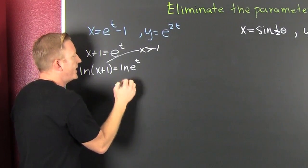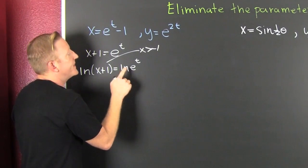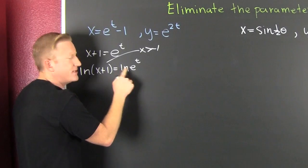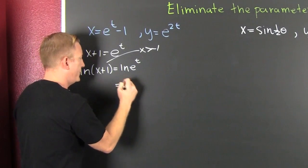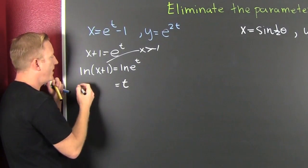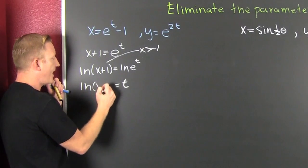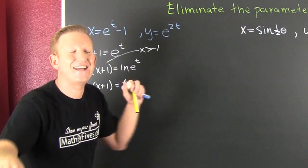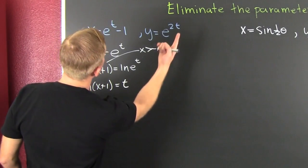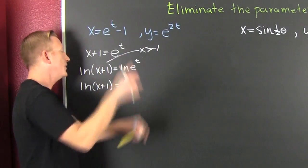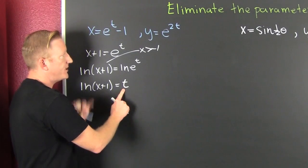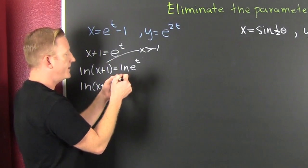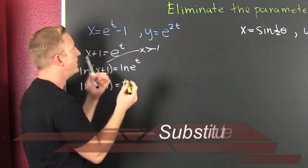Then we get rid of the e by taking the natural log, and the natural log of x plus one, that's going to be equal to the natural log of e to the t. This is curious. There's a domain restriction. That says that x has to be bigger than minus one, but we'll get to that. Now over there on the right hand side, e to the natural log, that's log base e to the e to the t, that's going to be t.